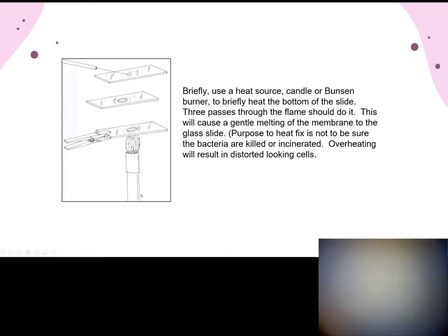The next step is heat-fixing. Apply the bacteria however you're doing that, then pass the slide through the flame. Move it back and forth — not just holding it there like roasting at a campfire. One or two passes over a Bunsen burner, or three to four passes over a candle like we have in our kits. That heat-fixes the bacteria to the slide.